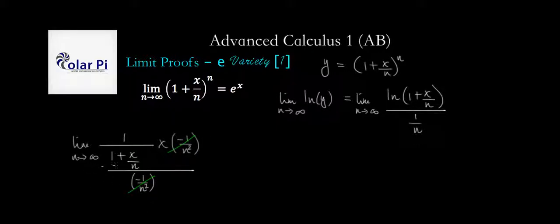Now, as n goes to infinity, what's going to happen to this, which is the only thing remaining, right? Well, as n goes to infinity, this again goes to 0, right? So we get 1 over 1 plus 0 times x, which is 1 over 1 times x, so we just get x.